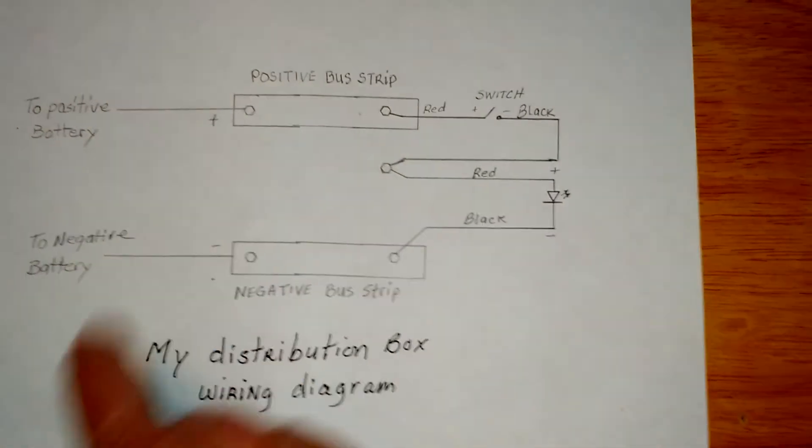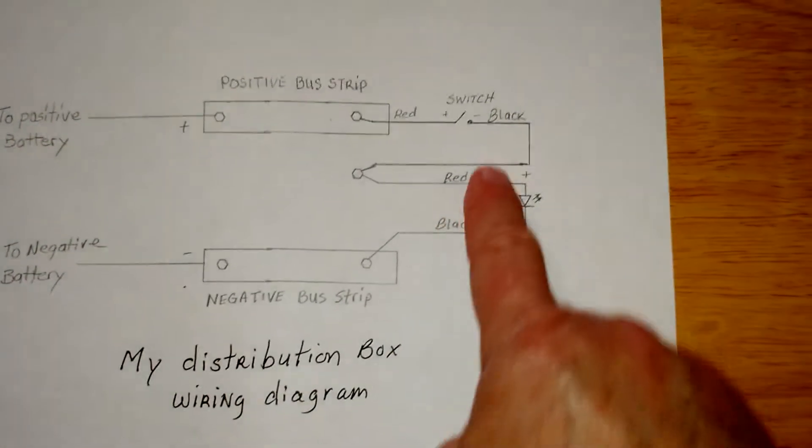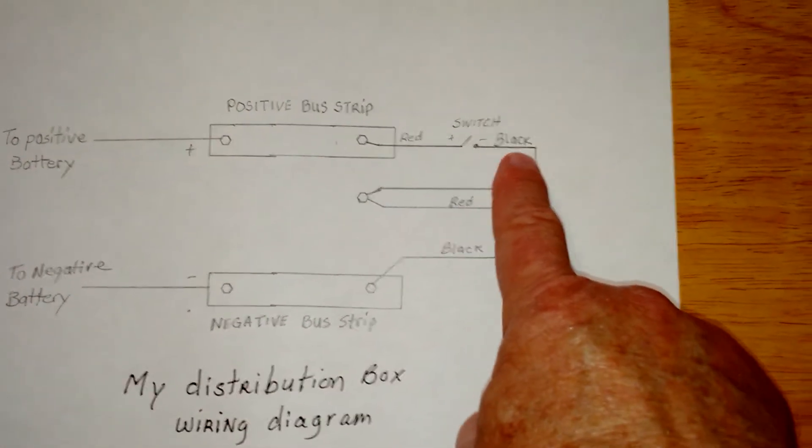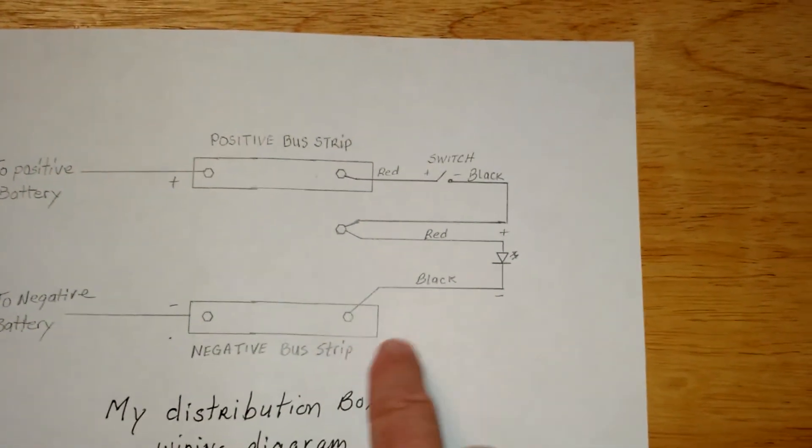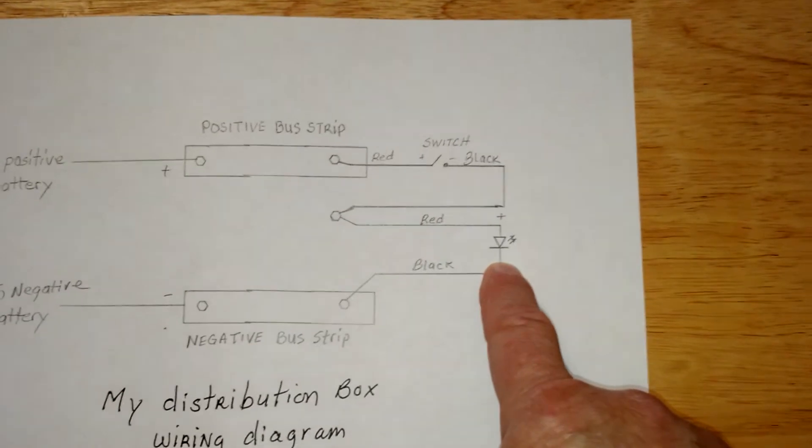And that is going to the negative side of the battery. So when you close this switch, it creates a path for current flow from positive to negative, thus lighting the LED switch.